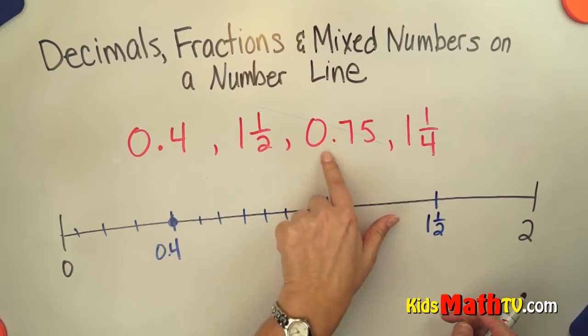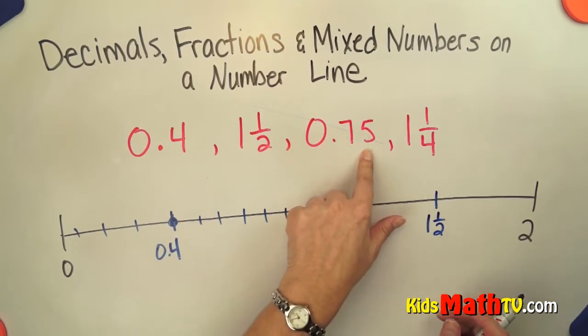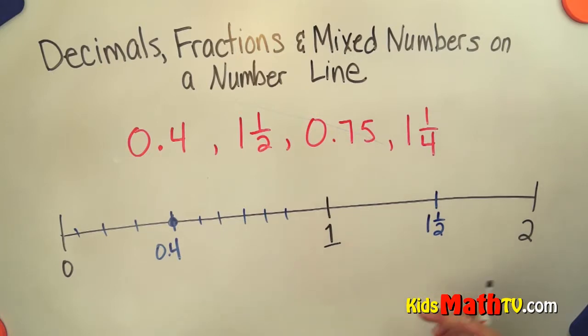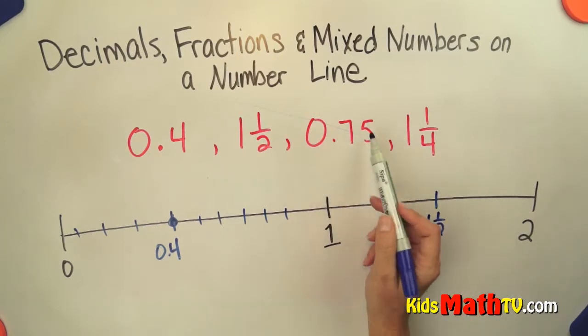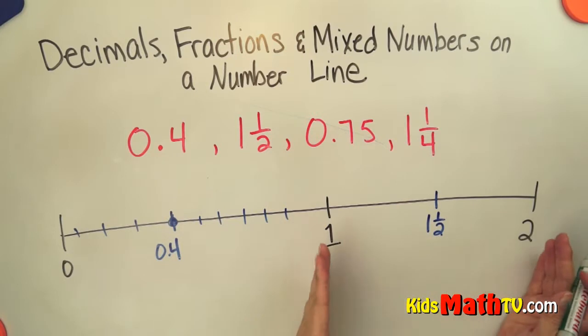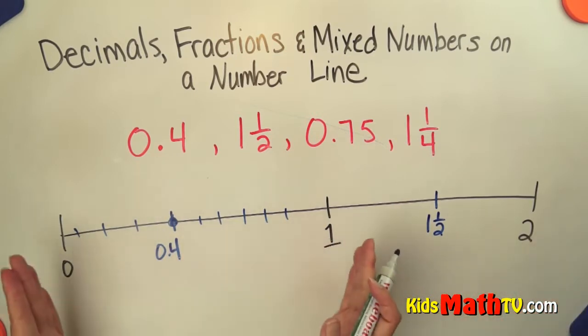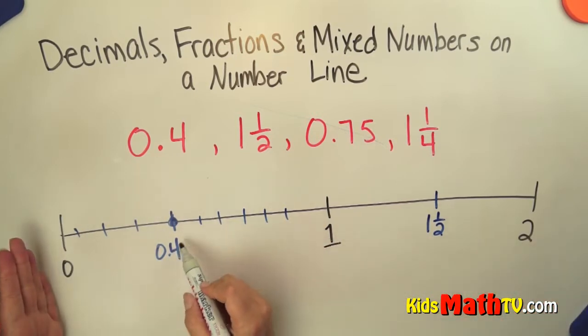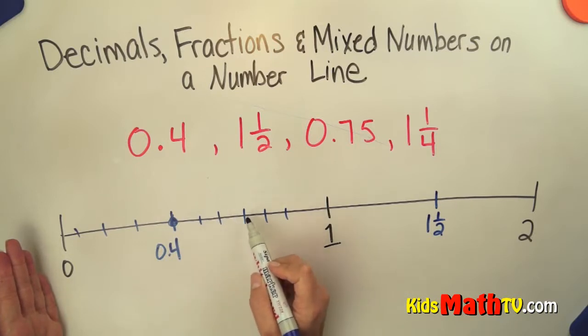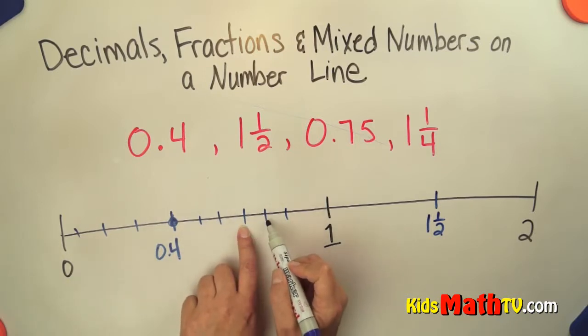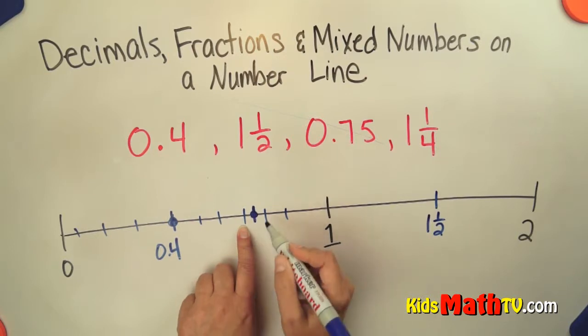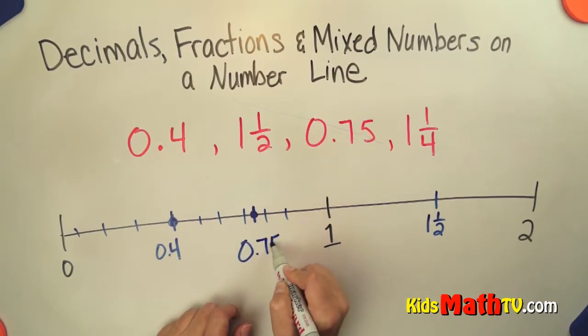Now I have 75 hundredths as a decimal. 75 hundredths is like 3 quarters, or 75 cents is 3 quarters of one whole dollar. So it's down here. This is 4 tenths, 5 tenths, 6 tenths, 7 tenths. This is 7 tenths and 8 tenths. It's actually right between 7 and 8 tenths. 0 and 75 hundredths.